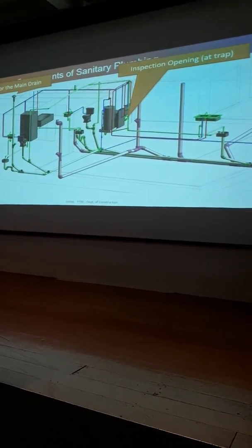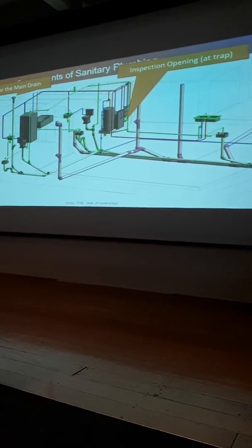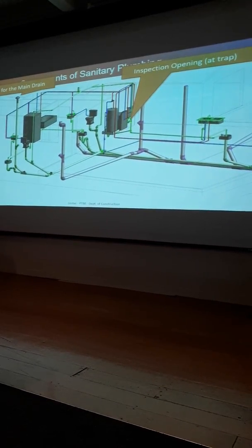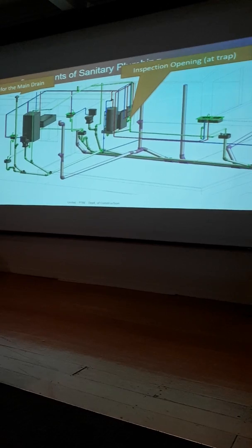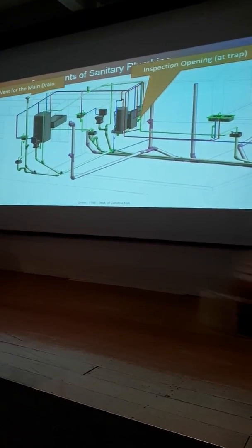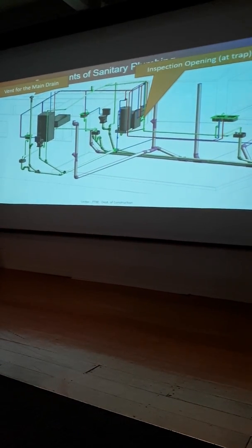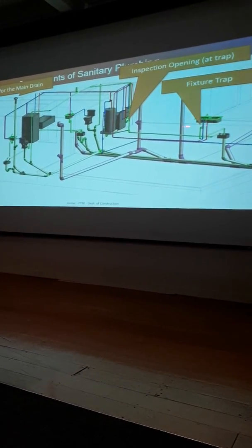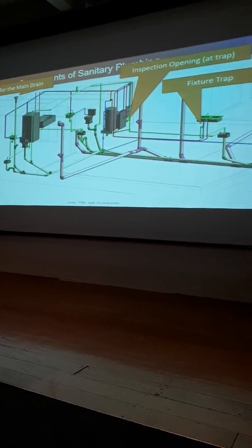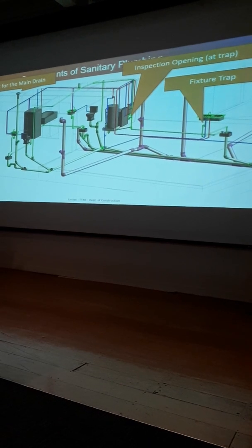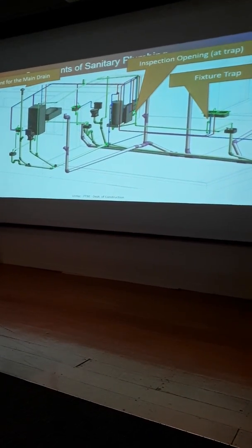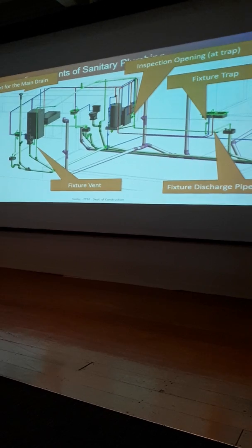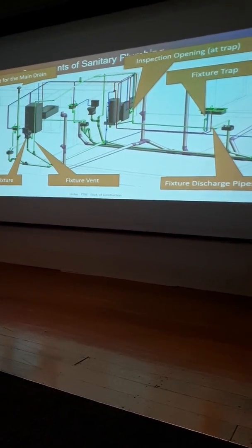We've got a vent for the main drain. These are some components you might need to look at. Inspection opening and trap. You'll find that most of these components have little caps you can open up. You'll have a pipe with a little cap. You can turn that and undo that and look down the pipe. You can stick a rod down and flush it through. There's inspection points everywhere nowadays. Fixture trap. Each fixture, or most fixtures, have their own little trap. That's that little S-bend that you see under your sink.